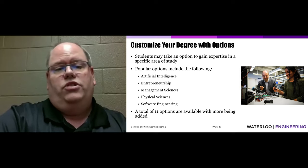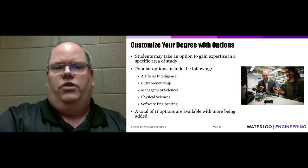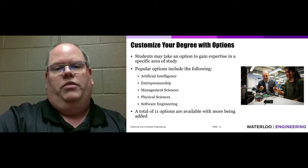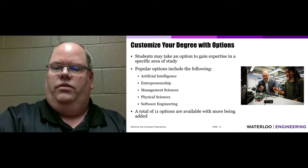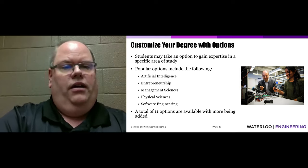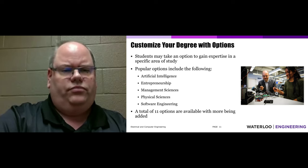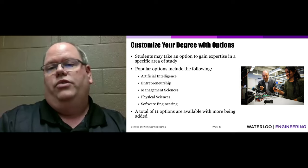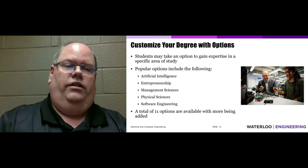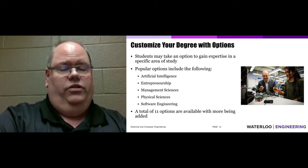I personally took the management sciences option as an undergrad and found it very useful — it gave me a nice package of courses to complement my technical expertise and rounded out my education. There's also a physical science option for those interested in physics, chemistry, and biology, and a software engineering option, very popular for computer and electrical engineering students who want greater knowledge of that discipline. In total, there are 11 options available right now, with more being added.